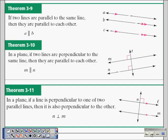Here we have three theorems. The first theorem, if two lines are parallel to the same line, then they are parallel to each other. So in this case, line A is parallel to line C and line B is parallel to line C. Therefore, we can conclude that line A is parallel to line B.